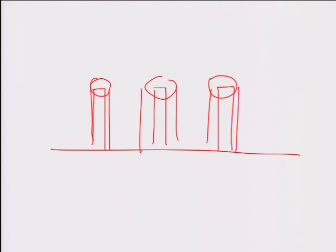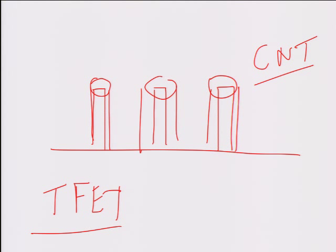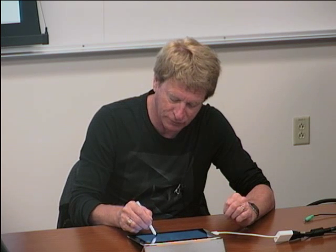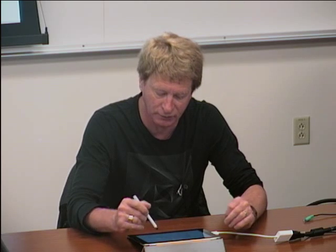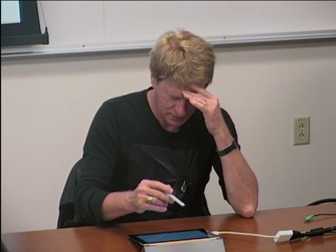Carbon nanotube transistors achieve gate-all-around control for excellent subthreshold behavior. Another emerging device is the Tunnel FET (TFET), which uses quantum mechanical tunneling across an energy gap as the transport mechanism rather than diffusion. TFETs may achieve around 40 mV/decade subthreshold slope — better than the 60 mV/decade bipolar limit. Bottom line: people are working hard to address the leakage problem, but these technologies take time because new process flows are expensive and change everything.